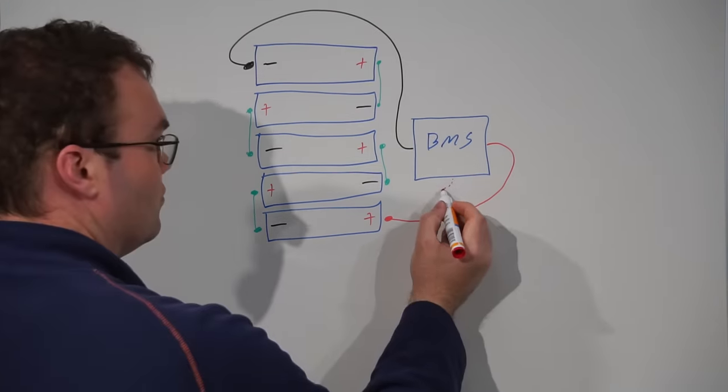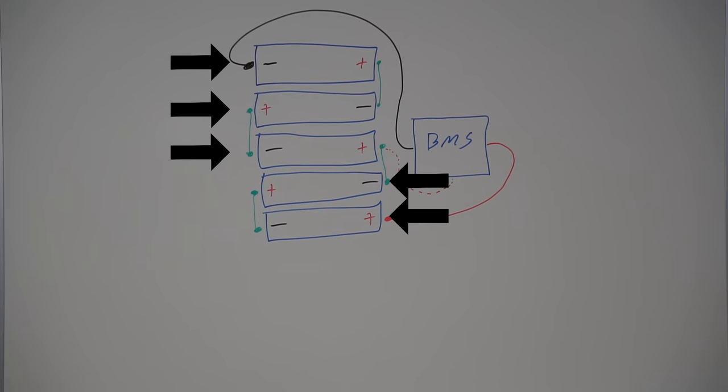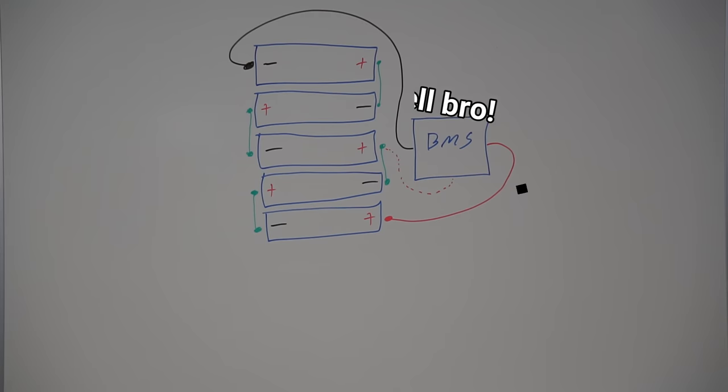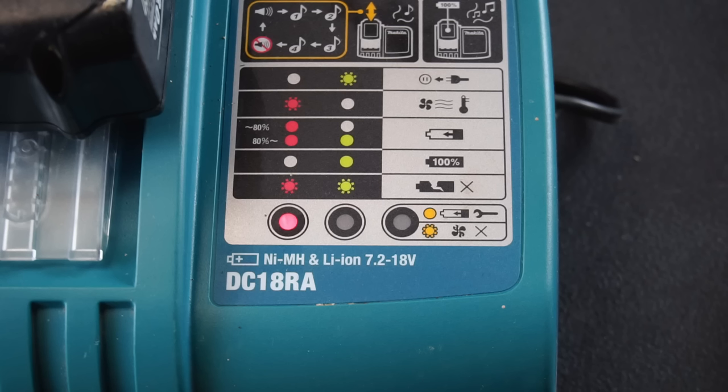The BMS also has an extra sense wire connected to the middle of the pack. Most likely this sense wire is used to measure the voltage comparison between the first 3 cells and the last 2 cells. And if the voltage is out of spec for either set of cells, then the BMS will think there is a faulty cell somewhere in the pack and will communicate with your charger to display a battery broken error and prevent further charging.